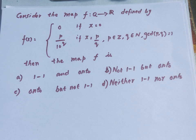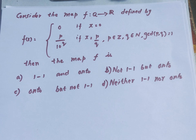So f(x) is defined as follows: if x is 0, then f(x) is 0. Otherwise, x is written as p/q where p is an integer, q is a natural number, and gcd(p, q) = 1. Then f(x) = p / 10^q. We need to determine whether this map is 1-1 and onto.